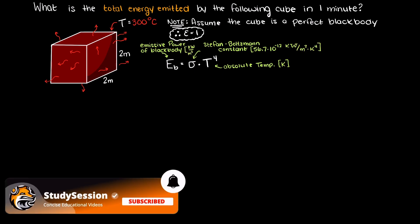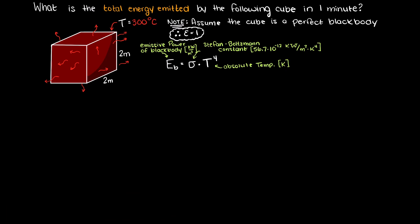Now, the first thing we need to do is convert our temperature to Kelvin, so we can just add 273.15 to our 300 degrees, and this will convert our temperature to the Kelvin scale, since we need the temperature to be the absolute temperature.